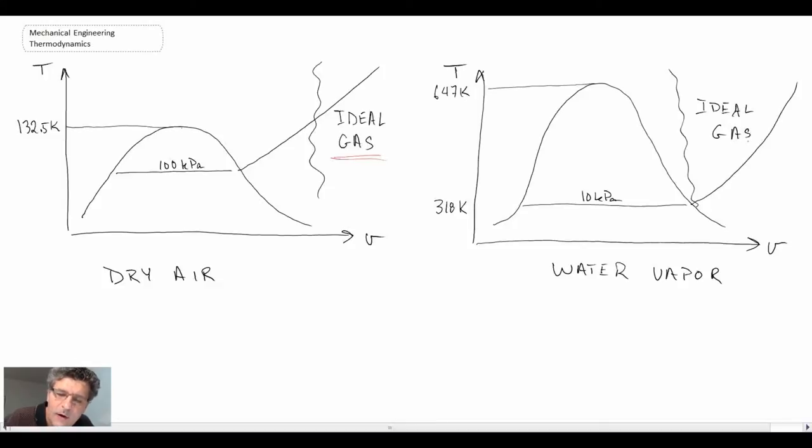When you look at the constant pressure line on a T-V diagram you will see that we are able to make this approximation and essentially what this will enable us to do is it will enable us to simplify some of the equations that make the analysis quite a bit easier when we go through and do HVAC.